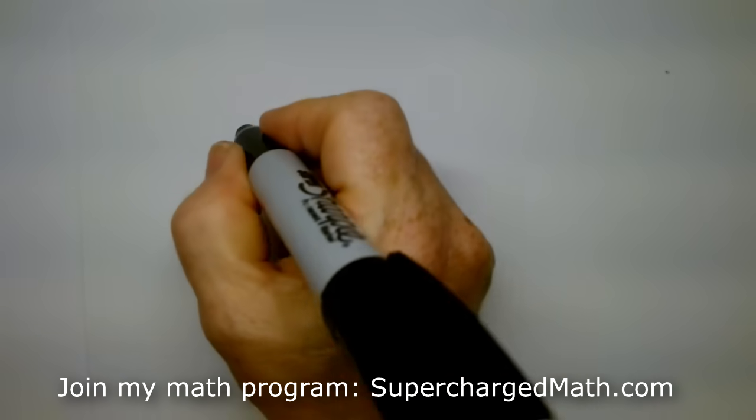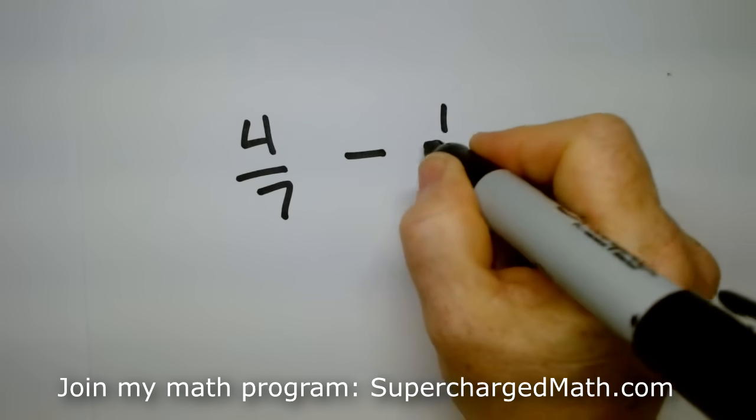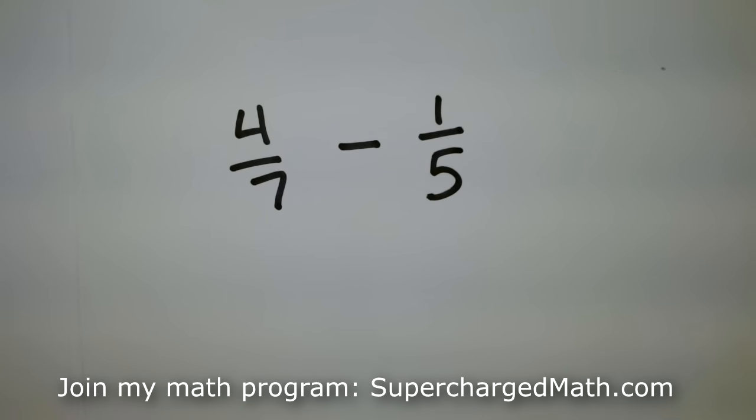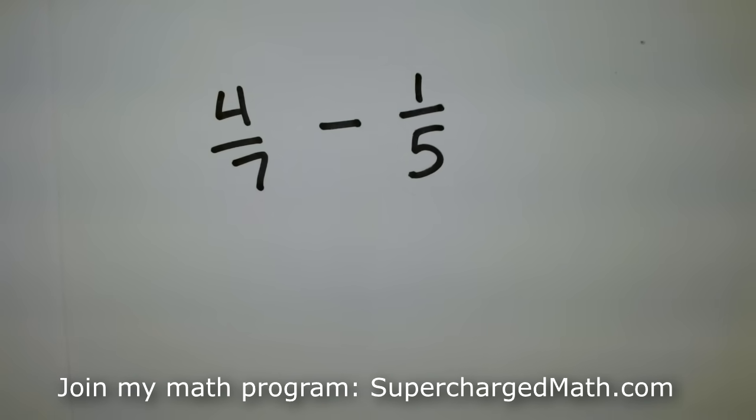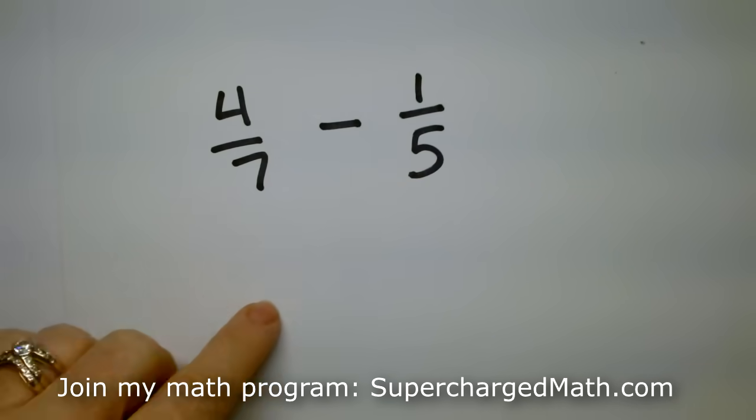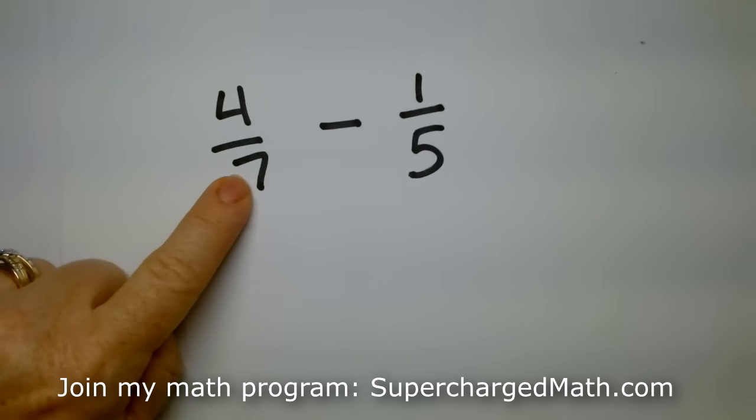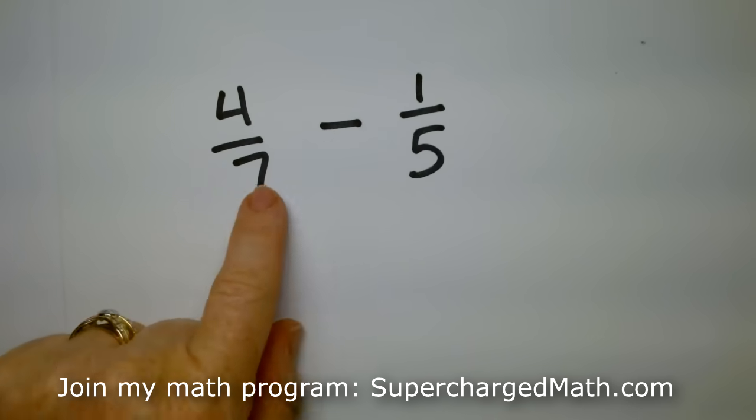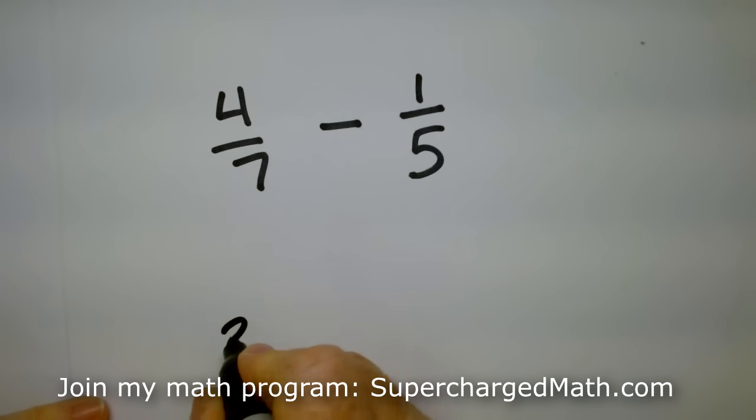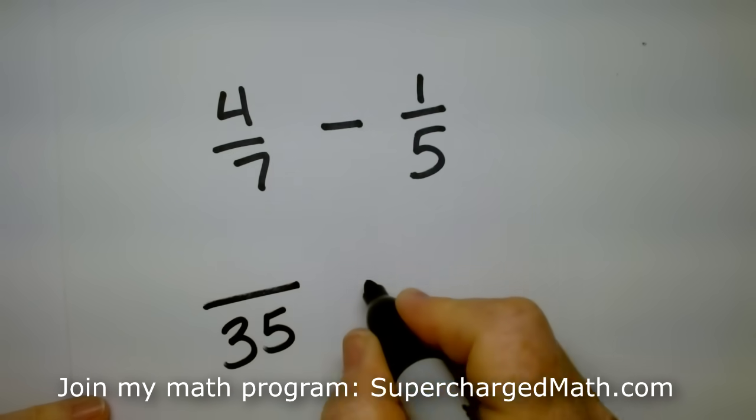So the next problem I have looks like this. I have four over seven minus one-fifth. What is the smallest number that seven and five both go into with no remainders? In this case, it's seven times five, right? Because this is five, ten, fifteen, twenty, twenty-five, thirty-five. And seven doesn't end in a five until we get to thirty-five. So the smallest denominator here is thirty-five.